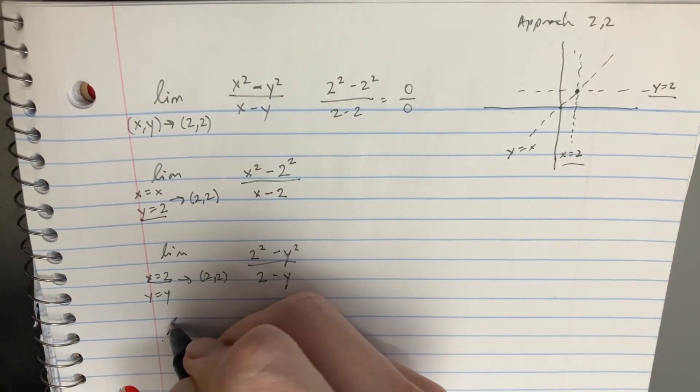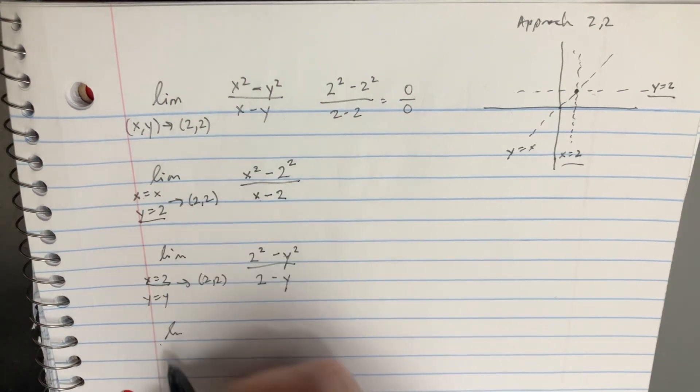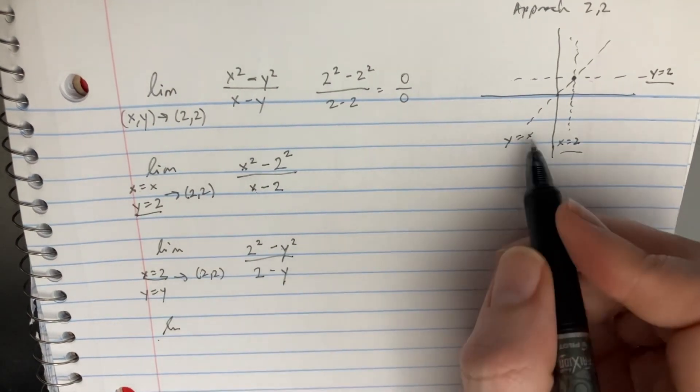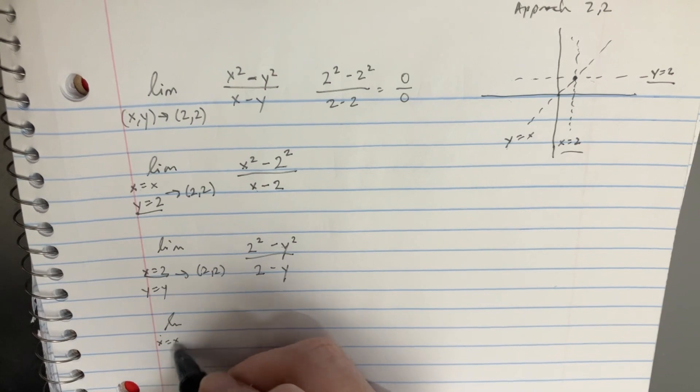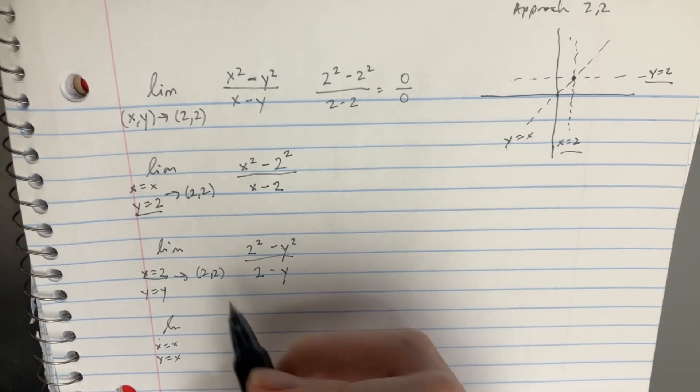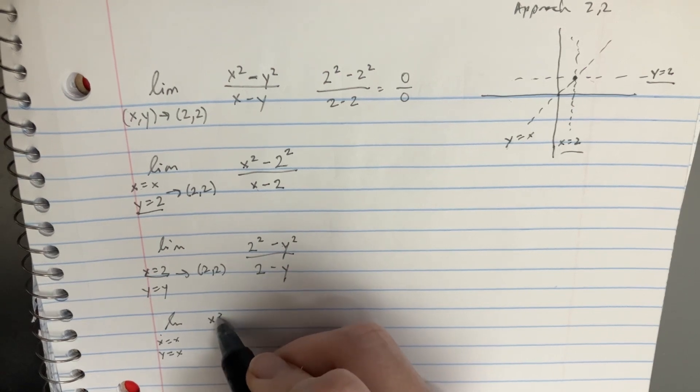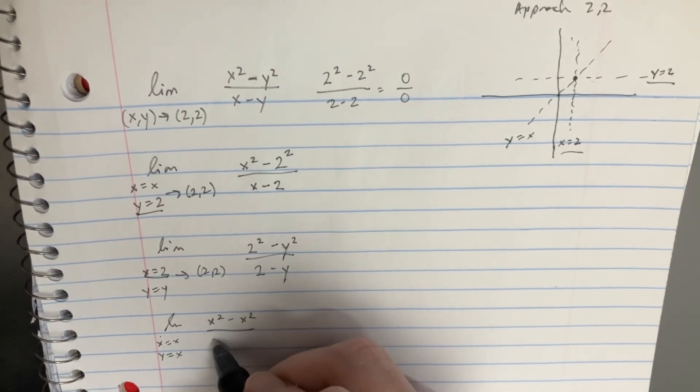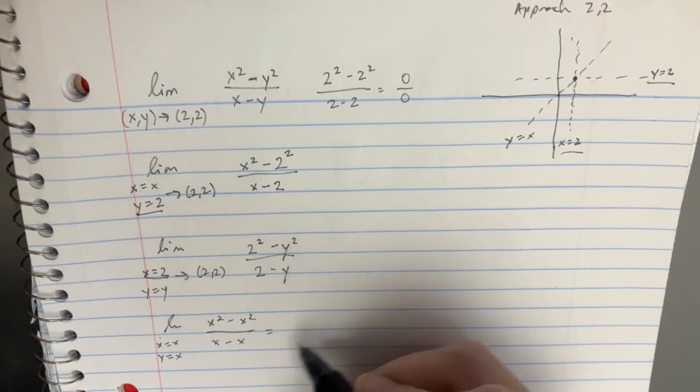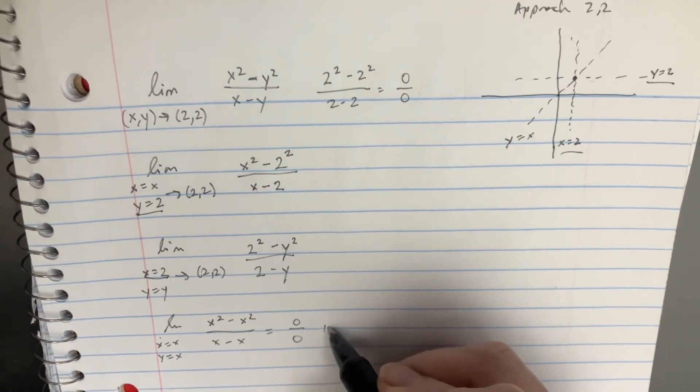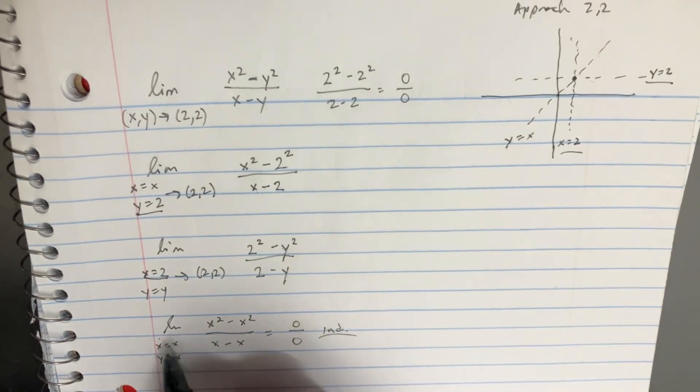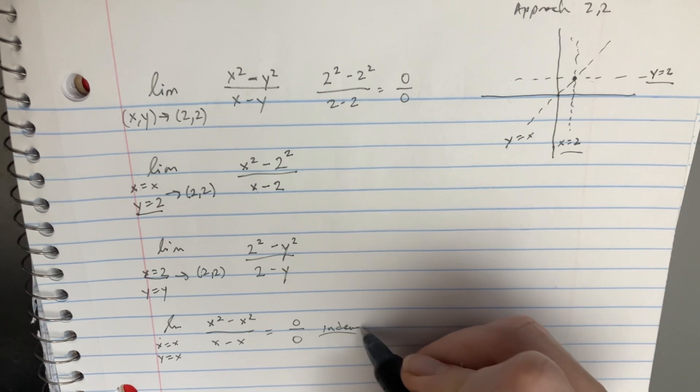And then for this last one, we have the limit. This one is just going to be y equals x. So x equals x, y equals x, and so we would get x² - x² over x - x. We can already see that this one's just going to turn out to be indeterminate. So it's not like we can use this.